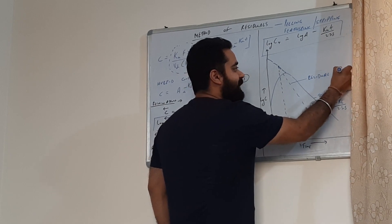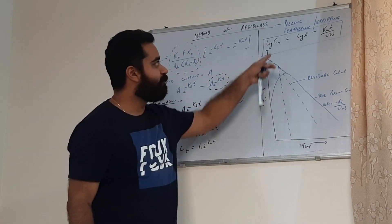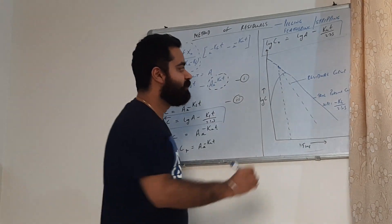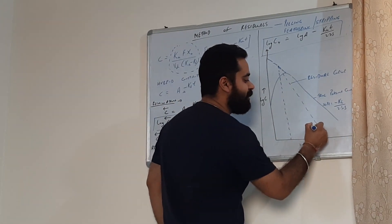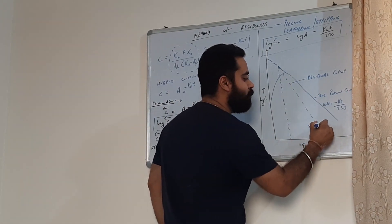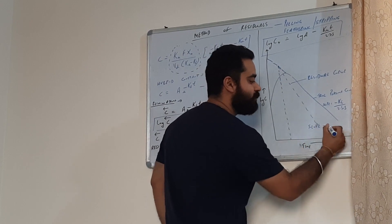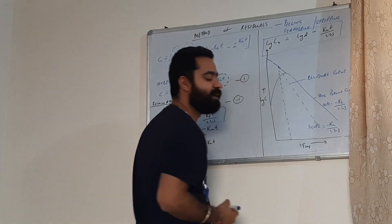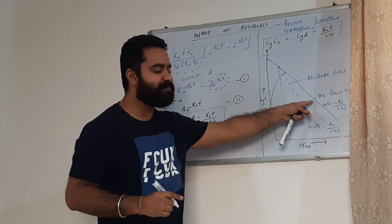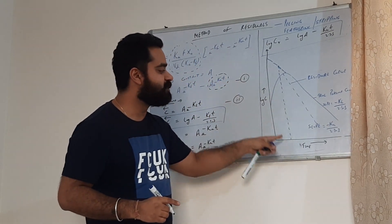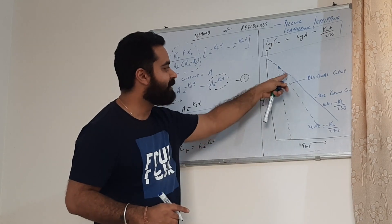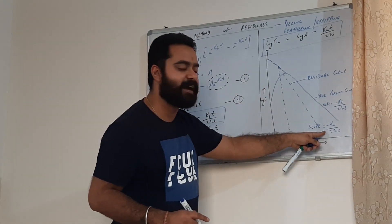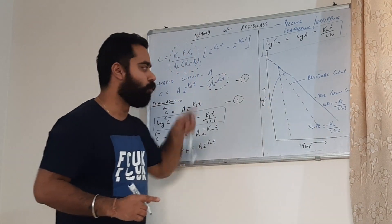The residual curve is a plot of log Cr with time, and the slope of this line is equal to minus Ka divided by 2.303. So using the same graph and the same values of concentration and time, we have back extrapolated this curve and determined the value of Ka in the same plot.